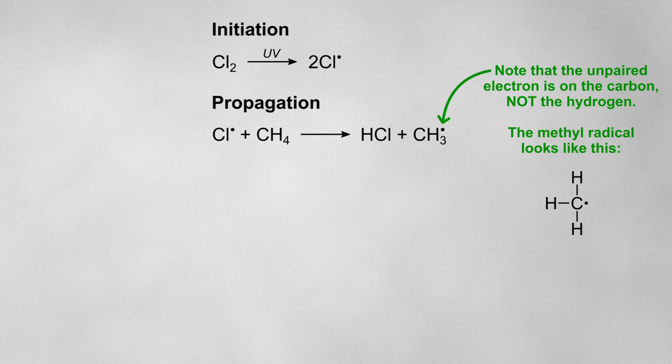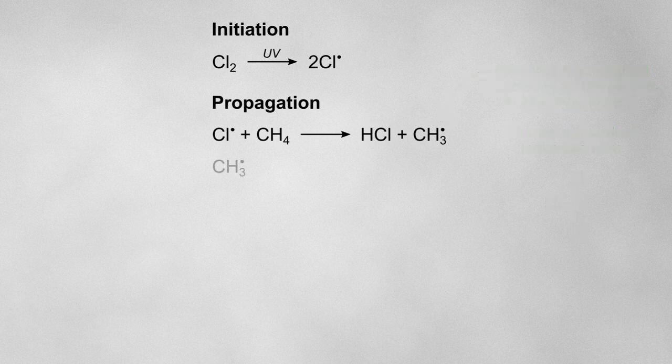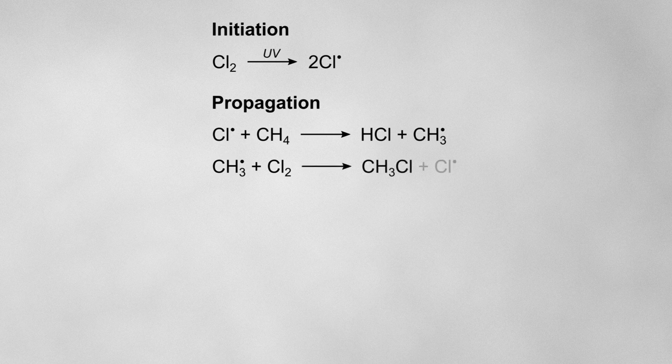This methyl radical now has the same problem that the chlorine radical had. The carbon atom has an unpaired electron but wants a full outer shell, so it'll also rip an atom off of the first molecule it comes across. If it collides with a regular Cl2 molecule, it'll rip a chlorine atom off to form chloromethane and will leave behind another chlorine radical.